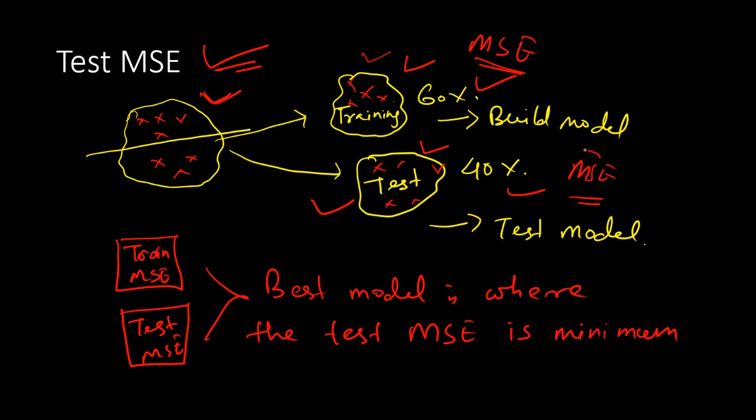One would be more concerned about the mean square error of test data set, not the training data set, because we already know that this training data set has been used for the model development. It's definitely going to be reasonable. But what about the test error? It has to be as close to training error. It has to be as minimum as the training error or it should also be very consistent with the training error.